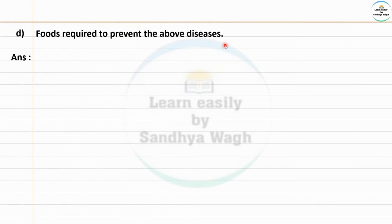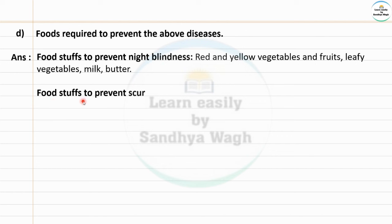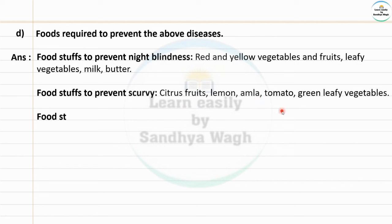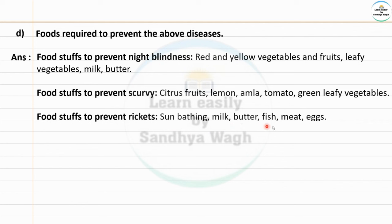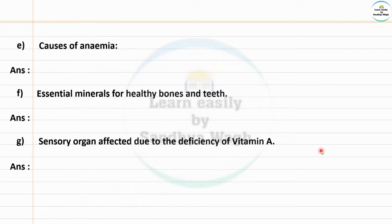Foods required to prevent the above diseases: To prevent night blindness — red and yellow vegetables, fruits, leafy vegetables, milk, butter. To prevent scurvy — citrus fruits, lemon, amla, tomato, green leafy vegetables. To prevent rickets — sunbathing, milk, butter, fish, meat, eggs. To prevent beriberi — cereals, nuts, pulses, milk, meat, fish.